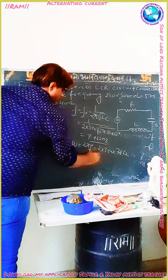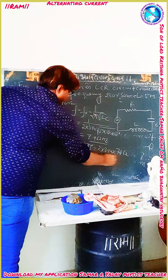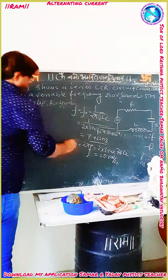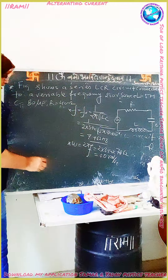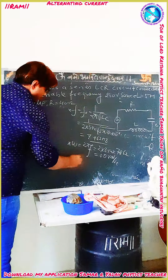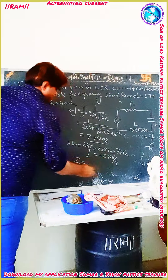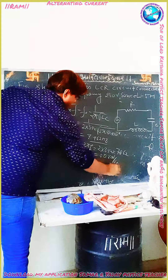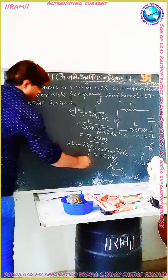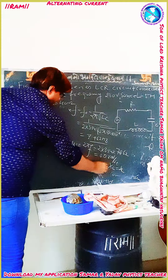Solving this, you will get 50 radians per second for angular frequency. Now we know that the resonating impedance Z — at resonance, XL is equal to XC, therefore Z is equal to R, which is equal to 40 ohm.